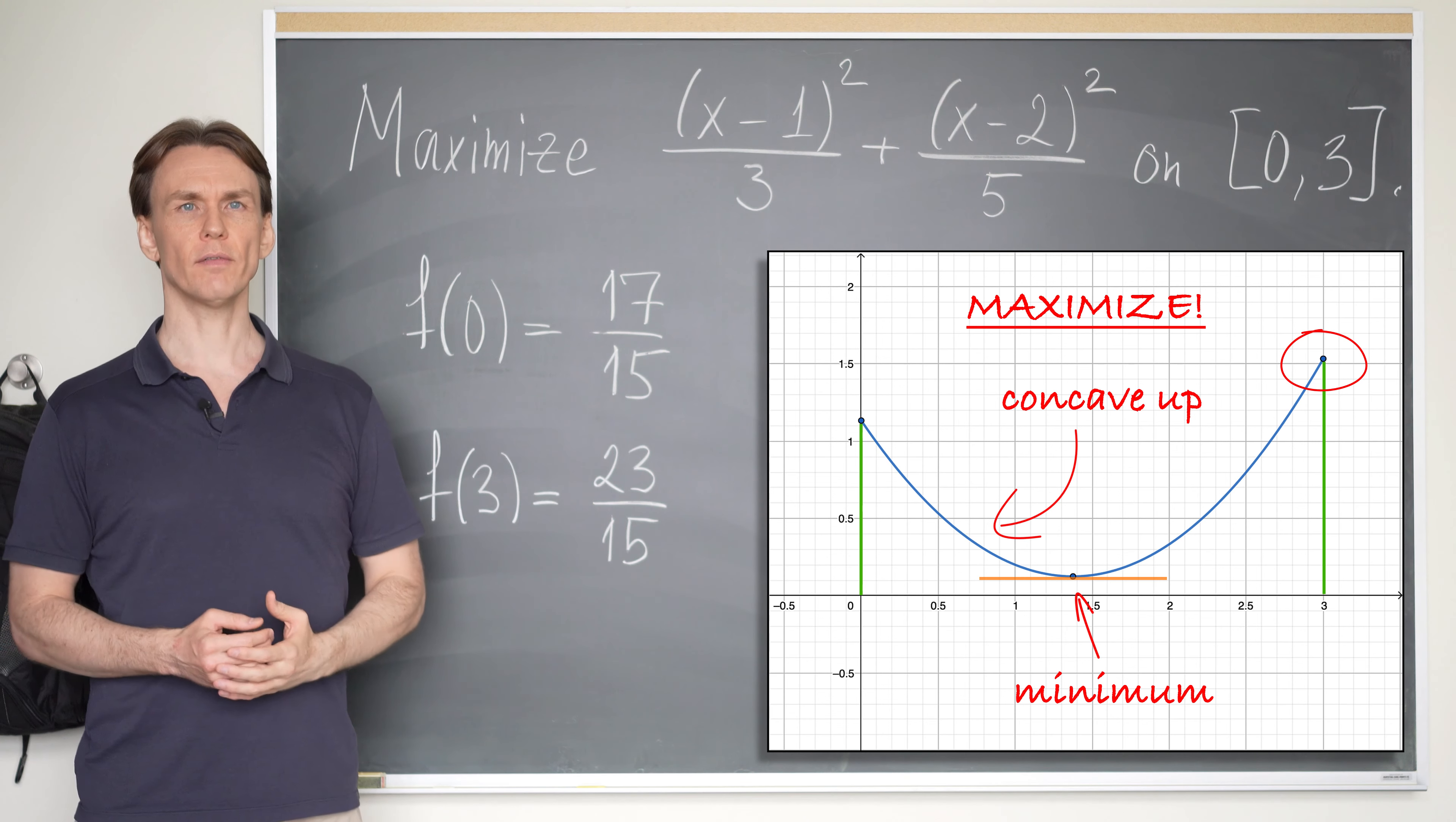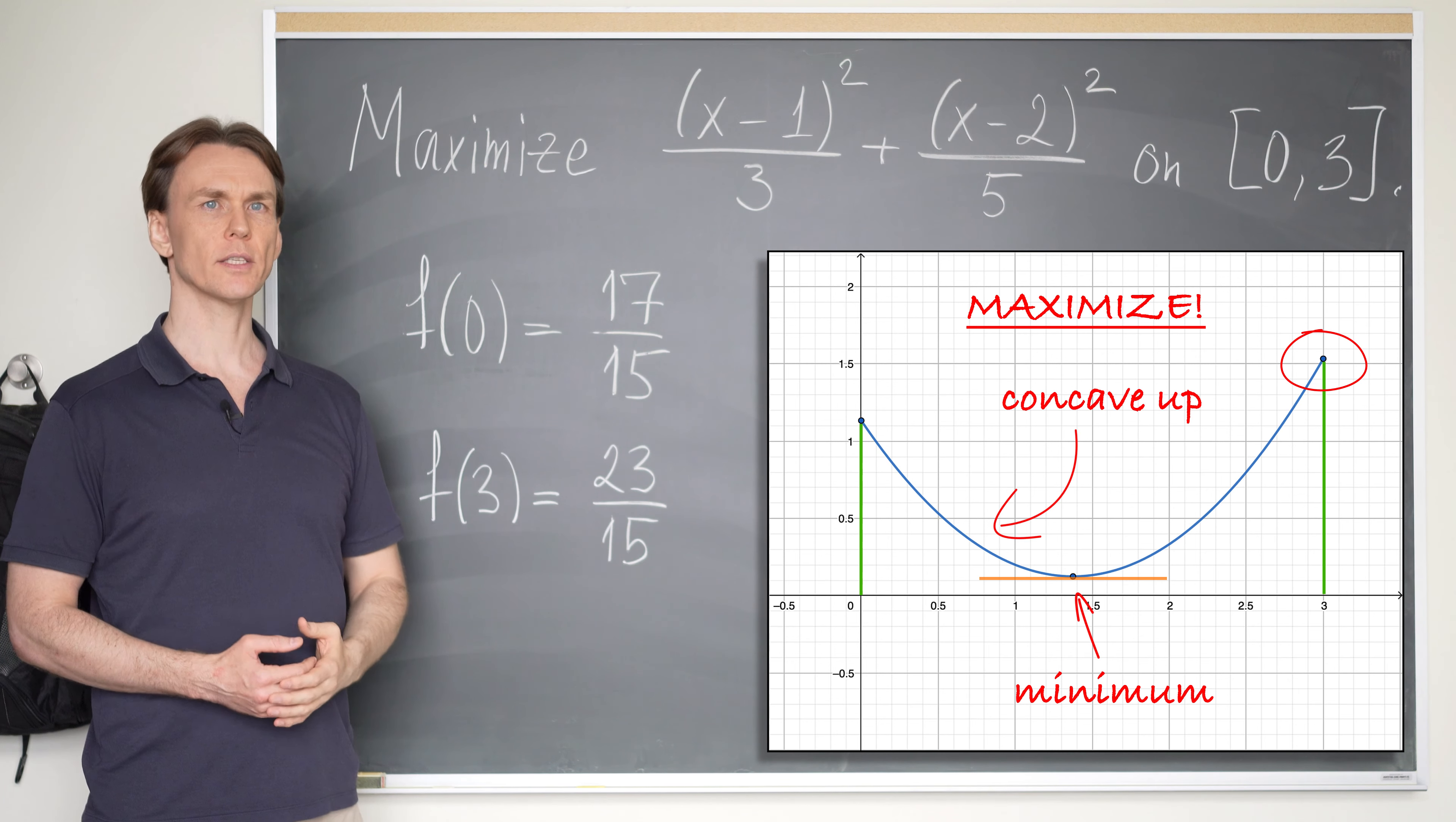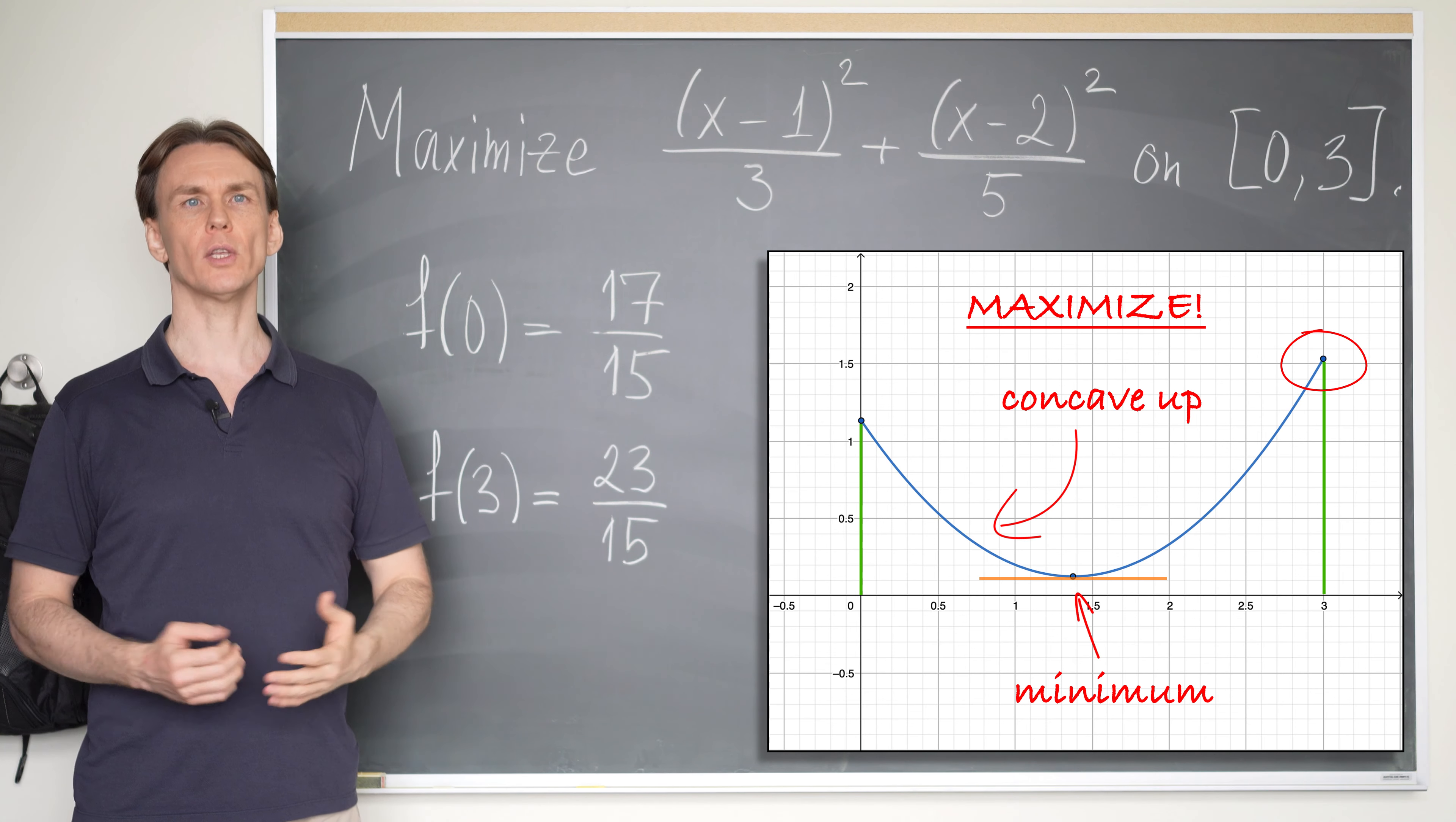So we know that the graph of this function will be a parabola, and in this particular case, if you square things out, you can see that the coefficient in front of x squared will be one third plus one fifth. So it will be positive, which means that your parabola will be pointing upward, so it will be concave up.